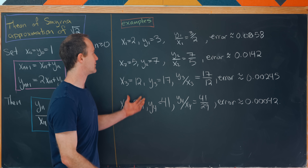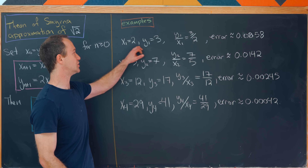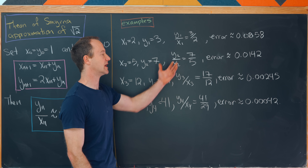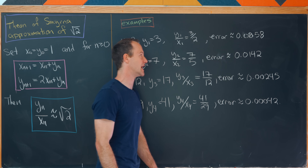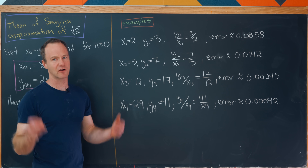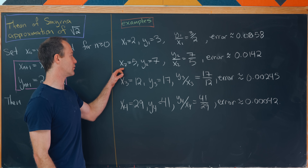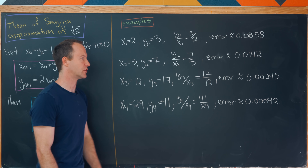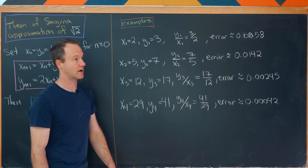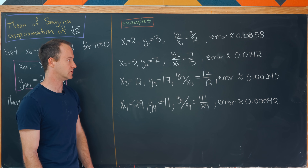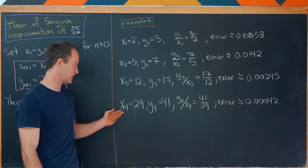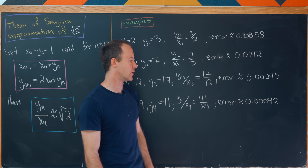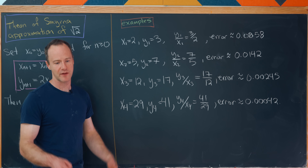Let's look at some example calculations. x₁ is 2 and y₁ is 3, making x₁ over y₁ equal to 3 over 2, with an error of 0.0858 — already fairly good. At the next step, x₂ is 5 and y₂ is 7, giving 7 over 5, with error 0.0142. Then at the fourth step, we have 41 over 29, and now the error is really quite small: around 0.00042.